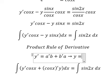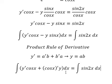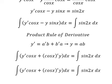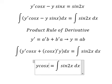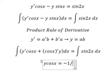So the integration of this one, we have y cosine x. The integral of sine 2x we have negative one-half cosine 2x.